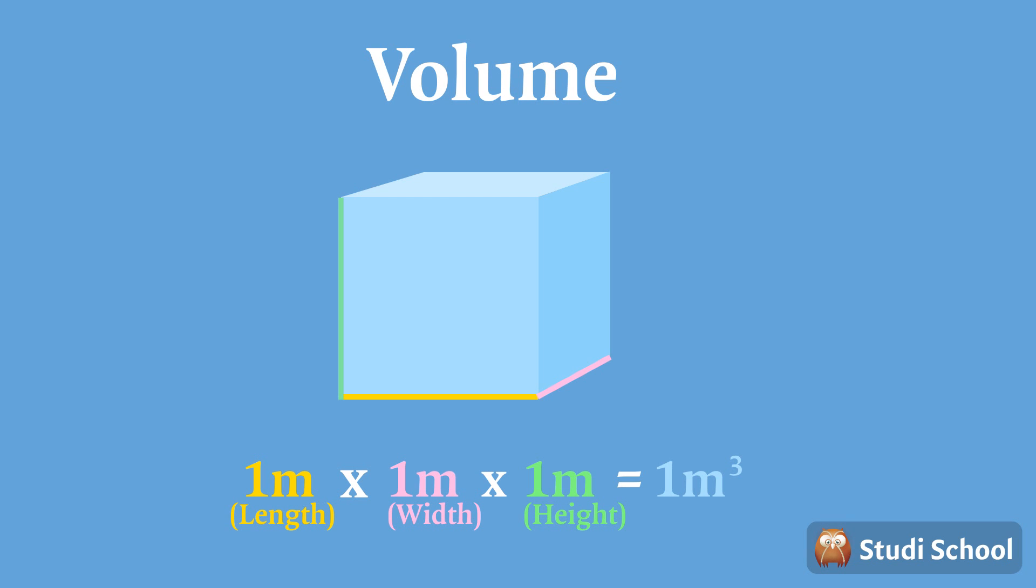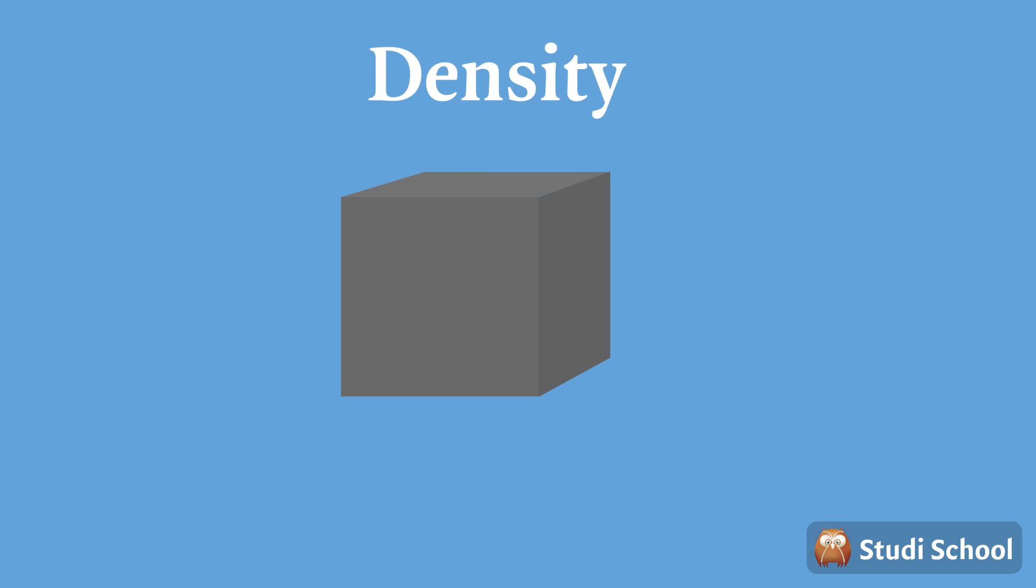The next derived SI unit is density. Density can be defined as the mass per unit volume. Basically, it tells us how much kilograms are in every cubic meter of the object. We measure it by dividing the mass in kilograms by the volume in cubic meters.